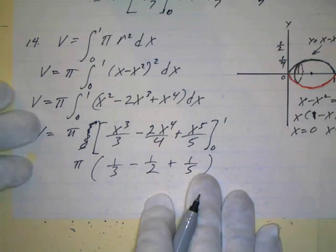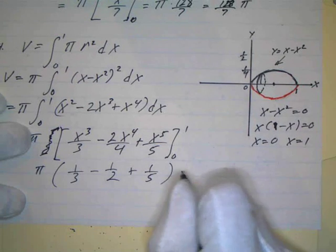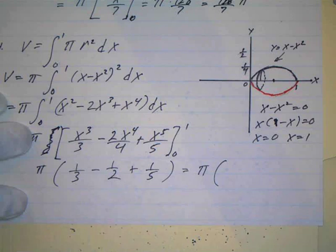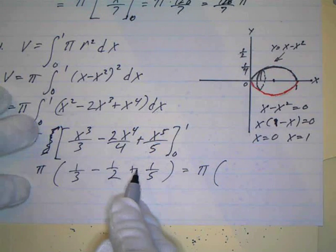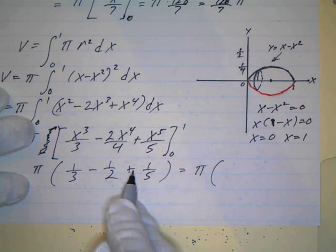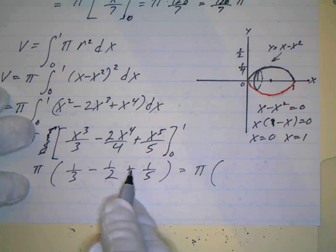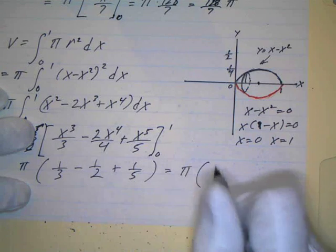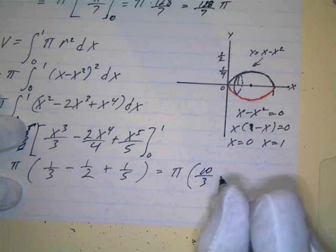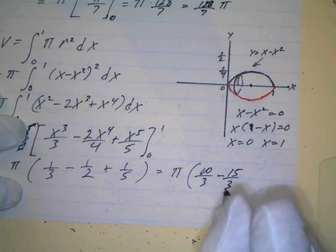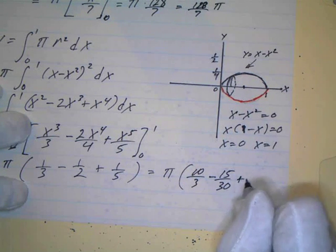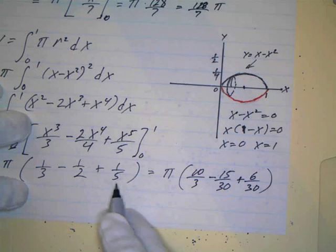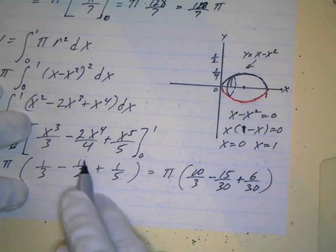So now we've got some fraction work to do. That equals pi times, and I guess my common denominator is 30. 3 times 2. So I have 3 times 2 times 5 is 30. So I've got, if I multiply the top and the bottom by 10, I've got 10 over 30 minus 15 over 30 plus 6 over 30.